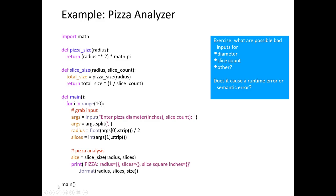Then we have a main function that does all the work, and at the very bottom we call main. This is a common programming structure where all functions are defined first. Inside main there's a loop — for i in range(10) — running 10 times. In orange we have the grab-input block, and then the pizza-analysis block. The grab-input section uses the input command to ask the user for diameter and slice count.